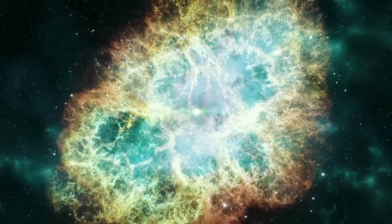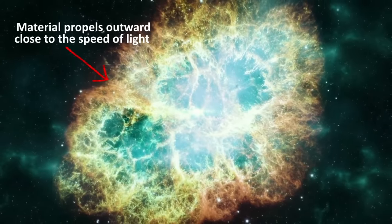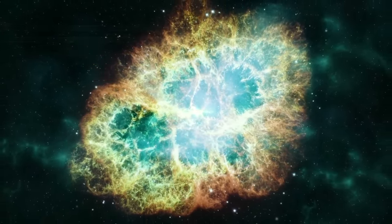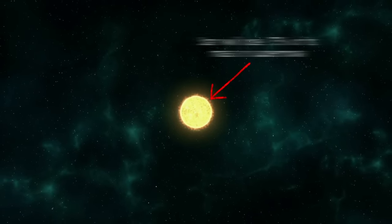This shock can propel the material away from the star at close to the speed of light in a tremendous explosion called a supernova. About 75% of the mass of the star is ejected into space in a supernova.